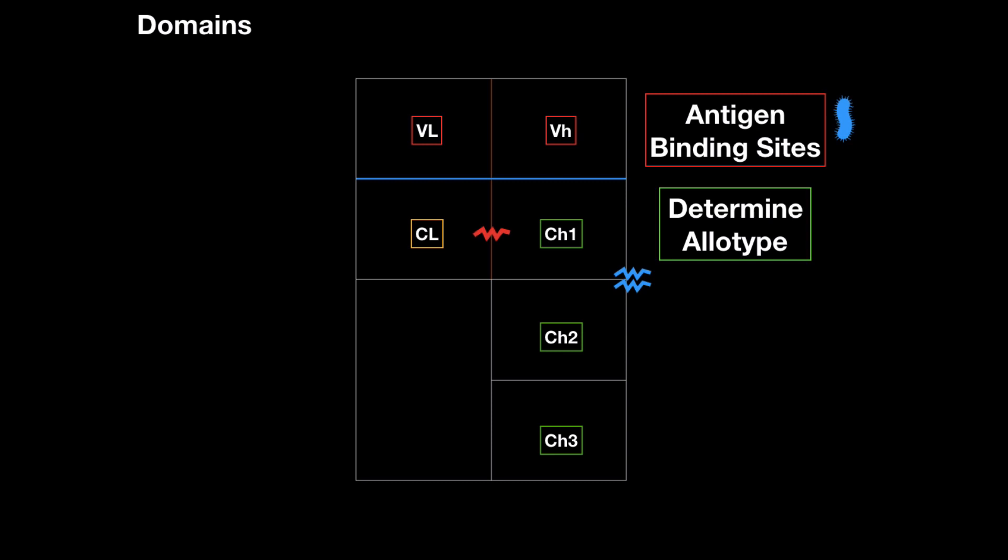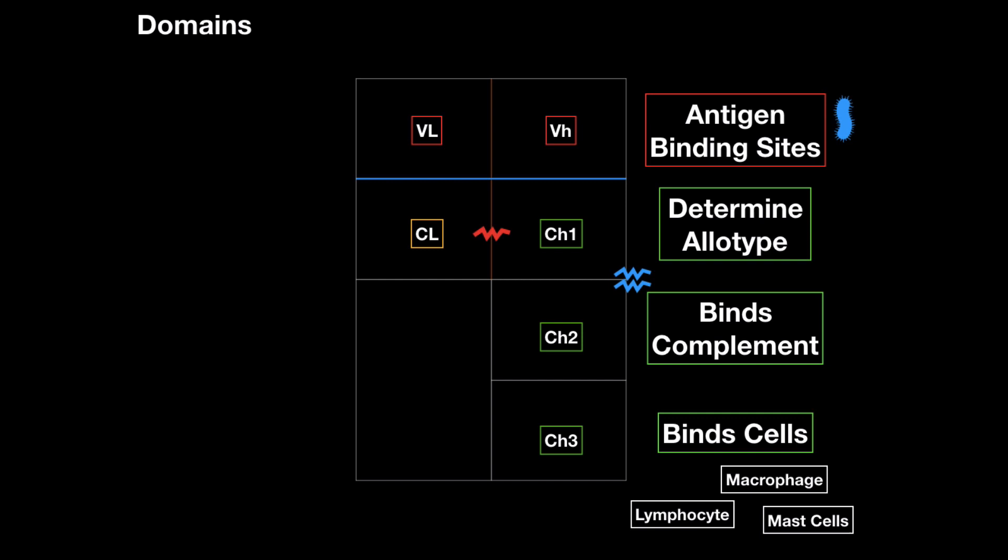All right, CH2 domains is where the C1 of the complement system binds. CH3 domains is where cells with FC receptor binds, like the macrophages, B lymphocytes, and mast cells, for example.